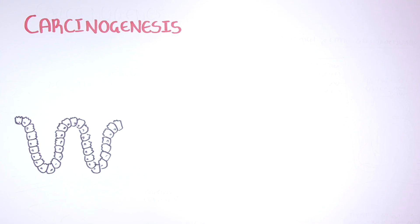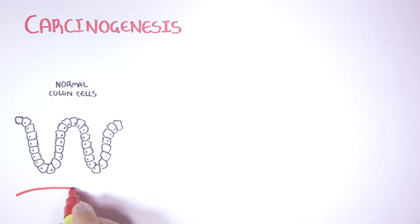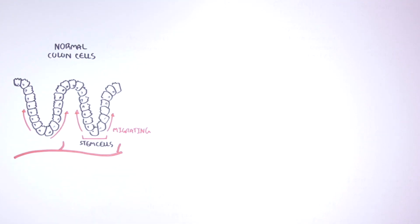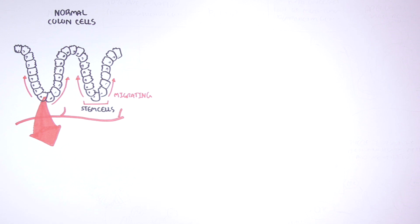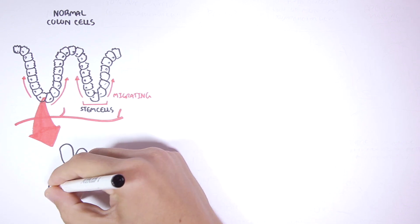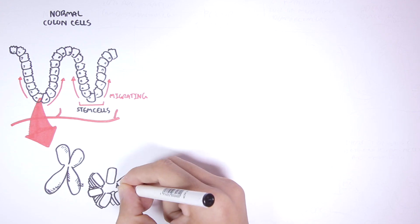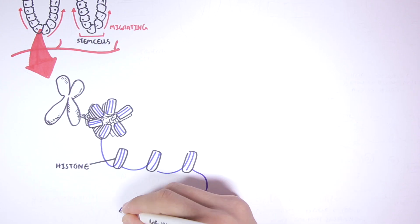We begin by looking at normal colon cells that have their blood supply. Here where the crypts are, stem cells will migrate up giving rise to new colon cells. If we look into the genetic material of one of these stem cells, their genetic material is DNA which is found in chromosomes. The DNA is all tangled up around histones. If we remove the histones here, we can see the DNA.